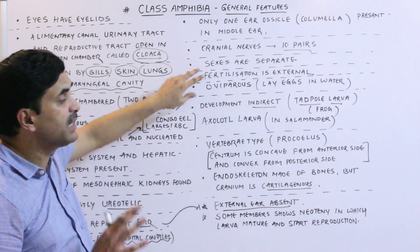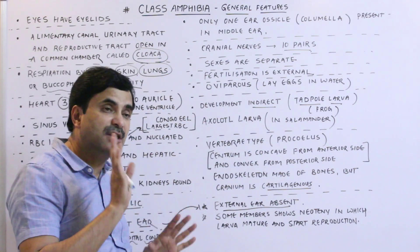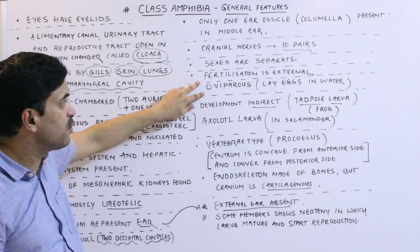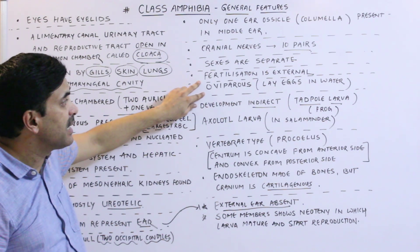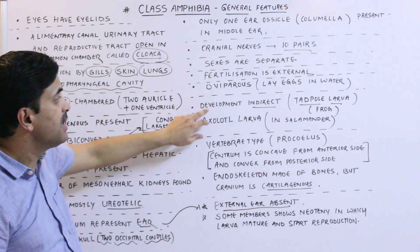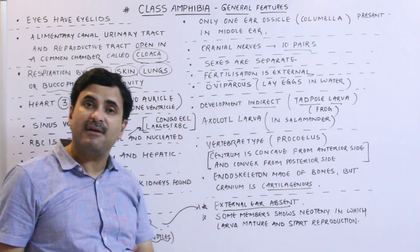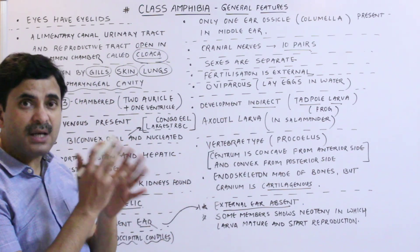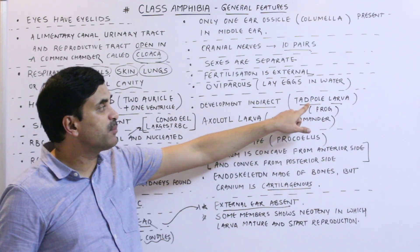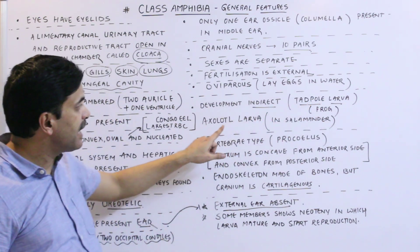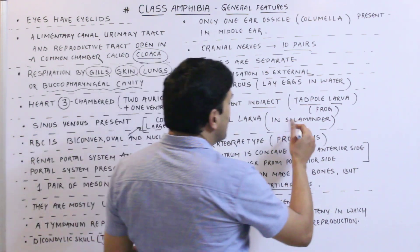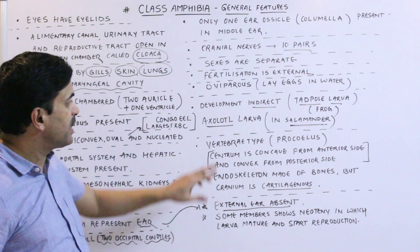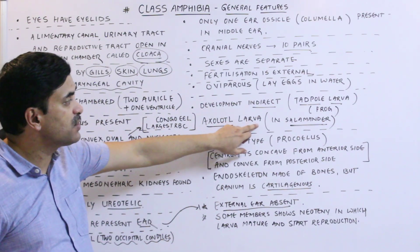Sexes are separate — male and female are distinct. Fertilization is generally external. They lay eggs in water and hence are oviparous. Development is indirect, so a larva is present. In frogs the tadpole larva is found, and there is also the axolotl larva associated with this class.